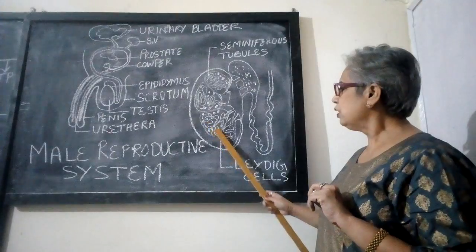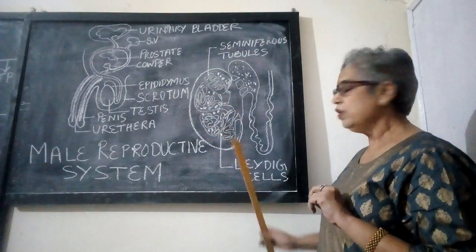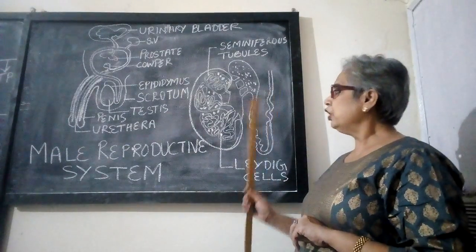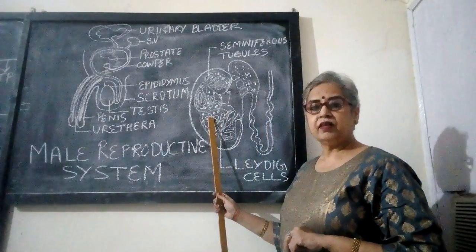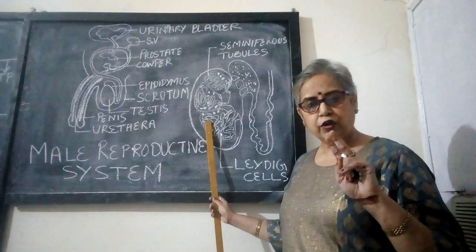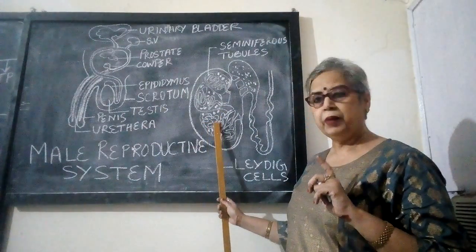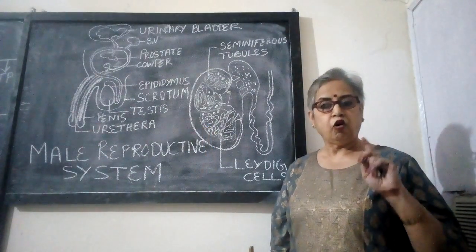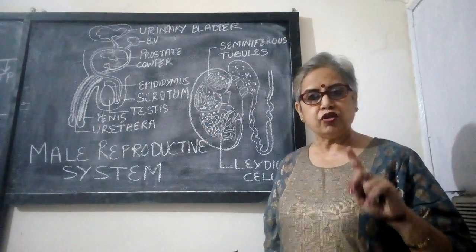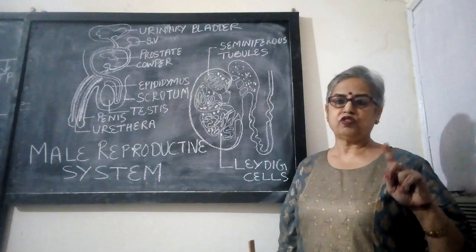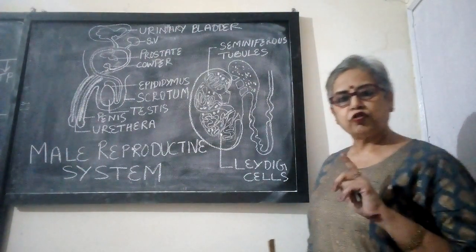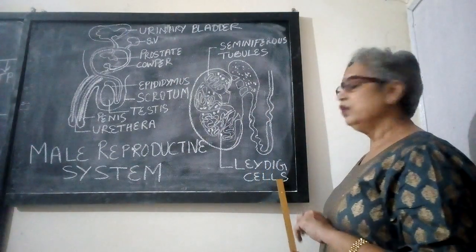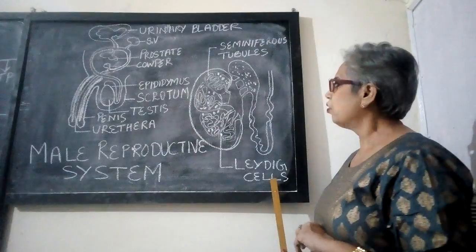You can see that the space between the seminiferous tubules is filled with another type of cells called Leydig cells. The testes perform a dual function. Number one: the production of the male gamete, that is sperm. Number two: the production of the male hormone testosterone, which is responsible for secondary sexual characters in males. Testosterone is produced by these Leydig cells.